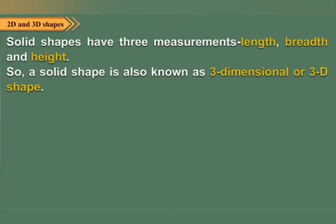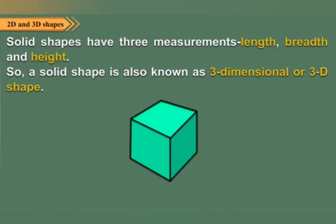Now let us know about some solid shapes. Solid shapes have three measurements: length, breadth, and height. So a solid shape is also known as three-dimensional or 3D. Solids have faces, edges and vertices.